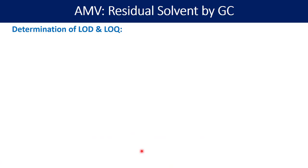The third parameter is the determination of limit of detection (LOD) and limit of quantitation (LOQ). There are three different ways to determine these: first by visual inspection, second by the slope method, and third by signal-to-noise ratio. Visual inspection is a traditional approach and not commonly followed today, so I recommend the other two approaches.